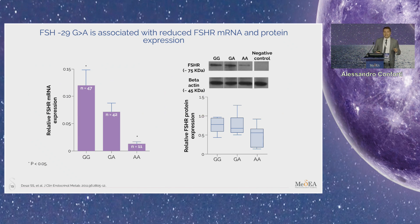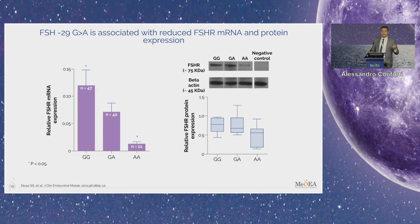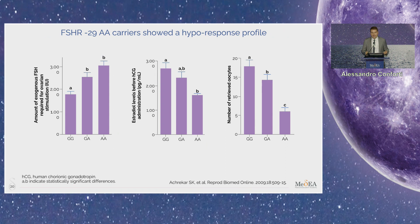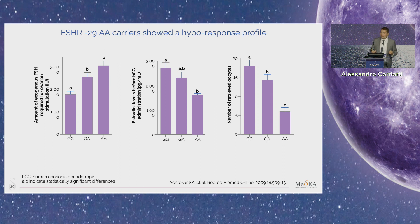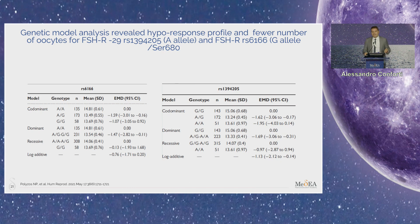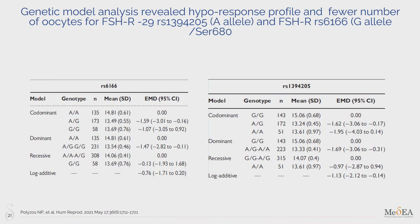Considering the FSH receptor promoter position polymorphism, it is not translated into an amino acid substitution. But even in these circumstances, when we have this allele, we have a reduced expression of mRNA of the FSH receptor. From a clinical point of view, we realize that even with this allele, we need more medication and we retrieve a lower amount of oocytes at the end of stimulation. This was confirmed in a recent paper by the Polyzos group, showing that both polymorphisms involving the FSH receptor and the FSH receptor promoter region are characterized by a poor response profile — requiring more medication to achieve a good number of eggs.